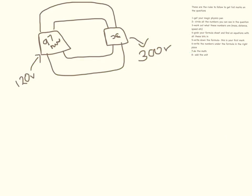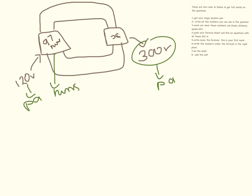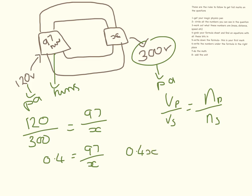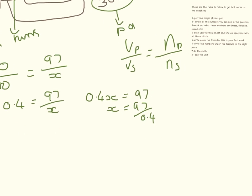In our next question we need to find the number of turns. Our equation is Vp over Vs equals Np over Ns. The potential difference across the primary coil is 120, the potential difference across the secondary coil is 300, and this equals 97 divided by x. Doing the maths first: 120 divided by 300 equals 0.4. So 0.4 equals 97 divided by x. Rearranging: 0.4x equals 97, so x equals 97 divided by 0.4, which equals 242.5 turns.